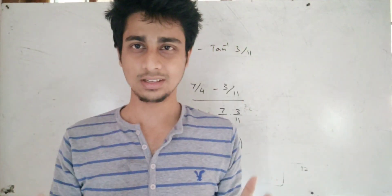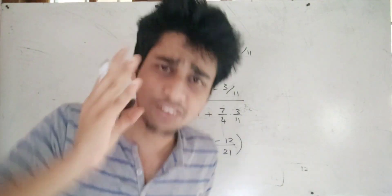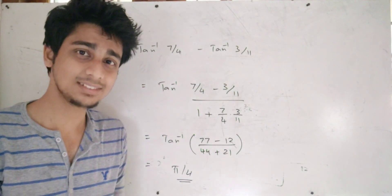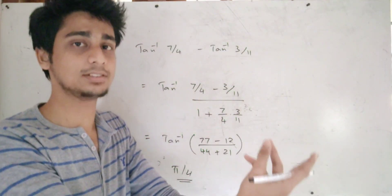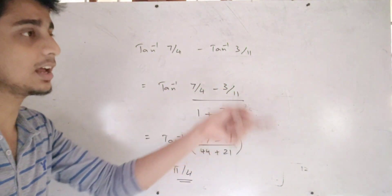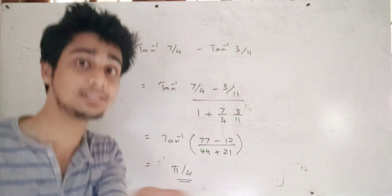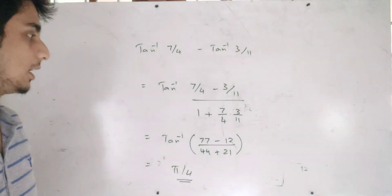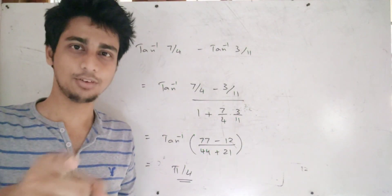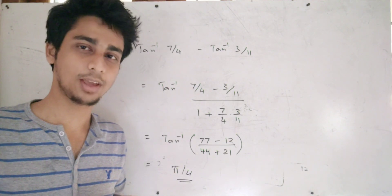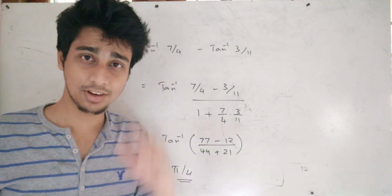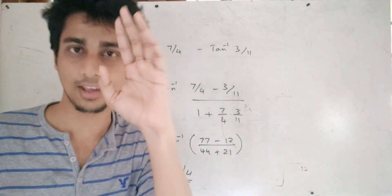The important formulas: tan⁻¹(a) − tan⁻¹(b) = tan⁻¹((a − b)/(1 + ab)), and tan⁻¹(a) + tan⁻¹(b) = tan⁻¹((a + b)/(1 − ab)). This is Part 1 of our trigonometry series. The remaining topics will come in the next video — Part 2: the conclusion of trigonometry. Bye, please subscribe and like.